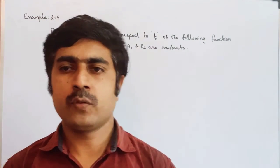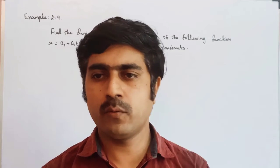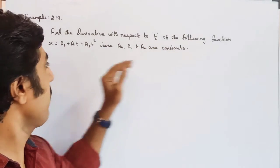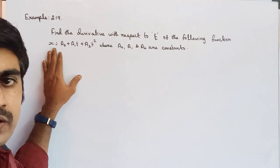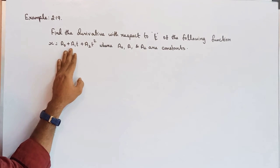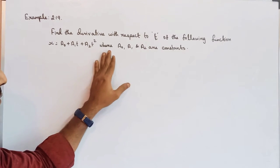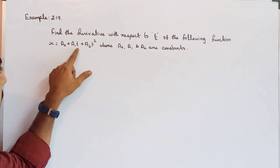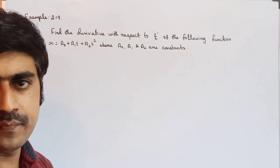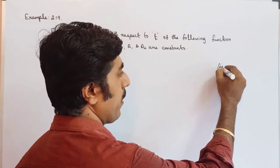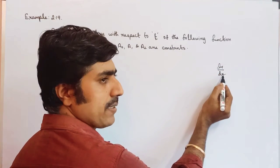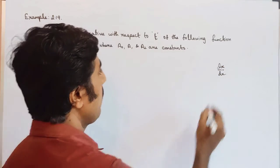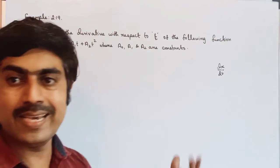Hi students. So if we talk about a differential calculus related example problem: find the derivative with respect to t of the following function — x is equal to a0 plus a1t plus a2t squared, where a0, a1, and a2 are constants. So this is constant, the variable is t and t squared. Derivative means dy by dx, and here we work with respect to time t, so the formula is dx by dt.